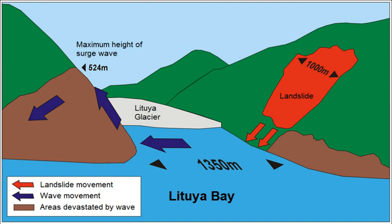A megatsunami is a tsunami — a large wave due to displacement of a body of water — with an initial wave amplitude measured in several tens, hundreds, or possibly thousands of meters. Normal tsunamis generated at sea result from movement of the seafloor. They have a small wave height offshore, are very long — often hundreds of kilometers — and generally pass unnoticed at sea, forming only a slight swell usually of the order of 30 centimeters above the normal sea surface.